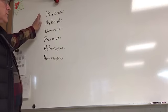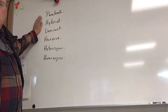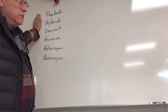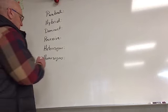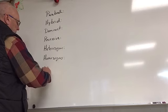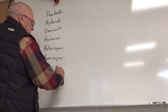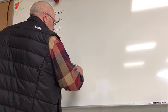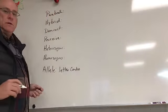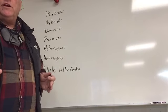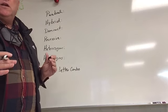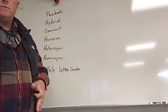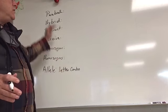The first word is purebred. When we're talking about a purebred, we're looking at the allele combination. Remember, the alleles are the letters — the letter combination in the gene. Each gene has two alleles, and each parent has the option of giving one of those alleles to the offspring.